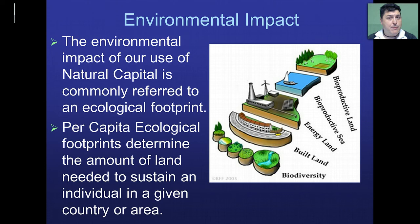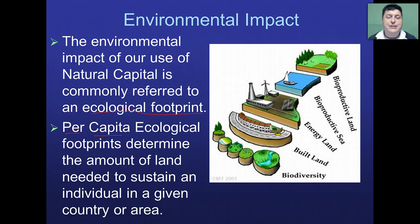We want to measure our impact on the environment — how much we're degrading that natural capital. The tool we use is commonly referred to as our ecological footprint: how much land are we using and how much are we impacting natural capital? One way to look at this is the per capita ecological footprint, because each country or region is going to impact and degrade natural capital differently. By looking at the per person impact, we can see how a given country or area is affecting those natural resources.